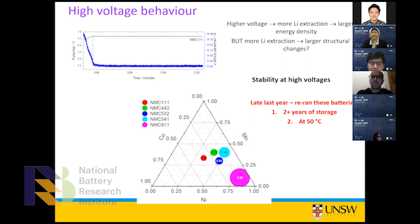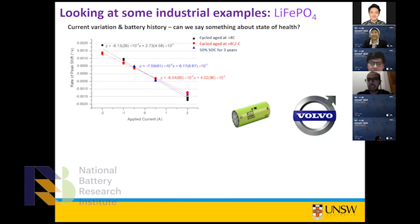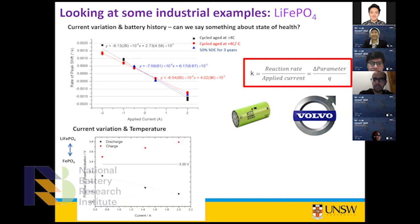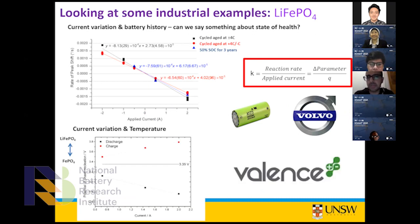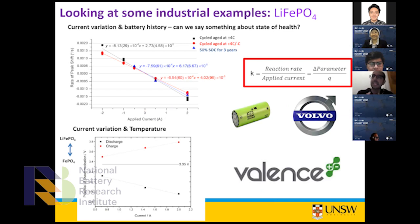We've done some commercial examples as well — work with Volvo and with Valence Technologies — thinking about how temperature affects the battery in terms of current and temperature, and how we can start to think about state of health using structural parameters.